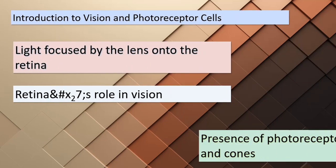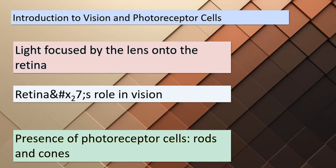Today we're delving into the captivating world of vision and the intricate mechanism behind it. Light enters the eye and is expertly focused by the lens onto a crucial layer called the retina. This remarkable layer lines the interior of the eyeball and plays a pivotal role in converting light into visual signals. Within the retina, we find two remarkable types of photoreceptor cells: rods and cones. The rods are our heroes in dim light conditions, aiding us in night vision, while cones are responsible for our perception of colors.